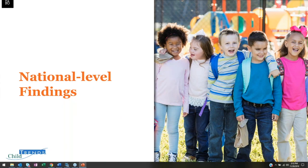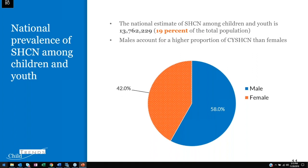The specific components of a medical home include access to a personal doctor or nurse, family-centered care, effective care coordination, and accessible healthcare services. Now we will look at some overall national-level outcomes about children and youth with special healthcare needs and how they compare to their peers without special healthcare needs.